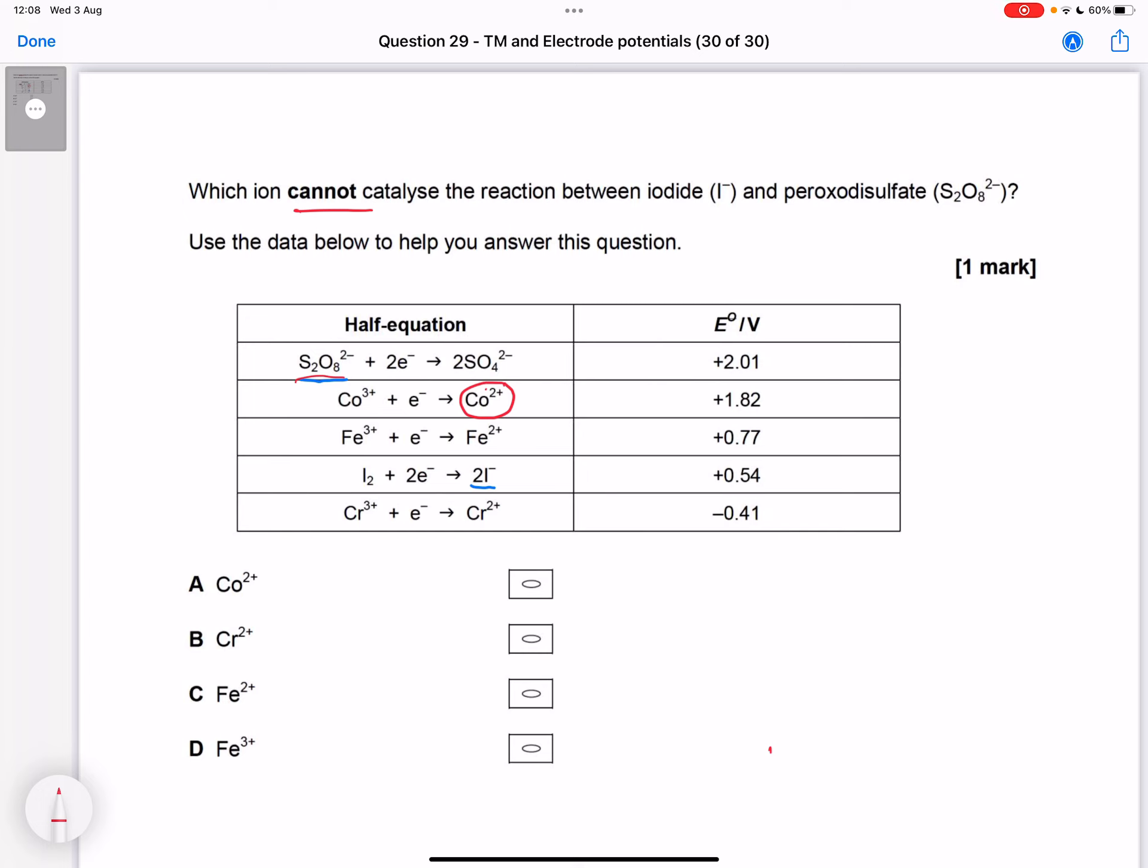And so the cobalt 2+ would get oxidized while the peroxodisulfate gets reduced, turning to cobalt 3+, which is above the iodide, so would then be able to react with the iodide. So that one would work.